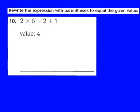Following the order of operations, there are no parentheses, so I move to step 2: multiply or divide from left to right. I have multiplication and division, so I do multiplication first: 2 times 6 gives me 12. I bring down the rest: 12 divided by 2 plus 1. Order of operations says divide next: 12 divided by 2 gives me 6. Now I have 6 plus 1, and 6 plus 1 gives me 7.